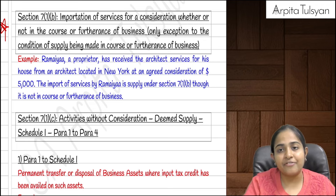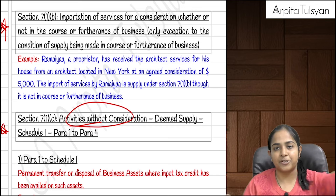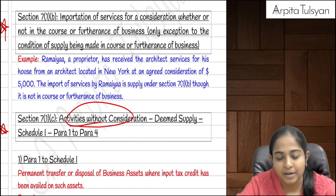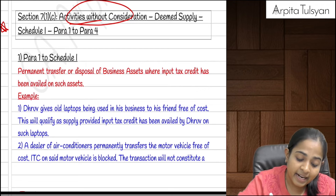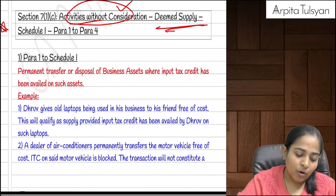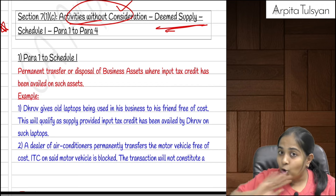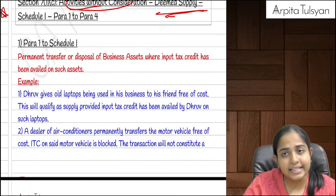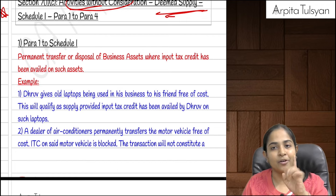Section 7(1)(c) talks about activities without consideration — another exception. In all previous points, consideration was mandatory. Now we are studying transactions done without consideration that will still be considered a supply. These are called deemed supplies. There will be supply of goods or services with no consideration, but done in the course of business. These transactions are mentioned in Schedule 1 to the CGST Act.